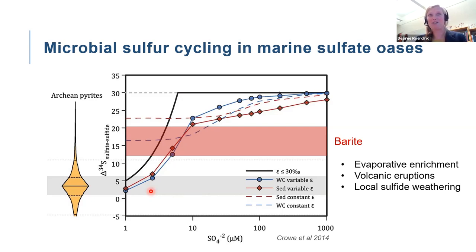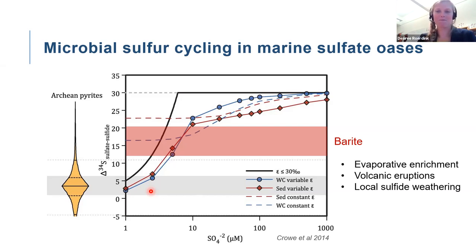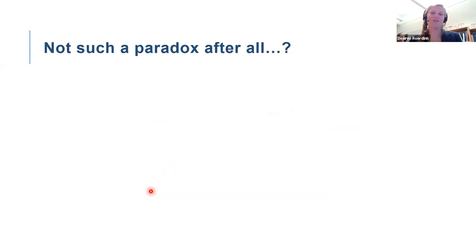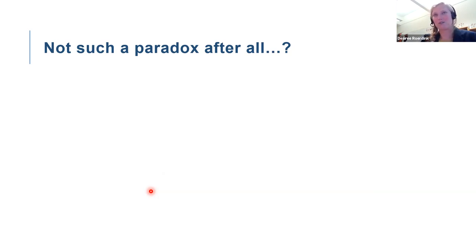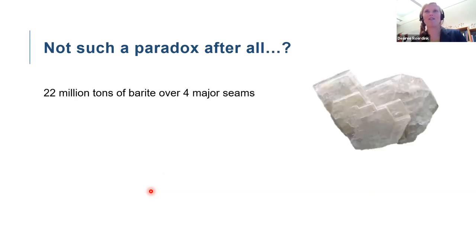Outside these sulfate oases, sulfate reducers may have been present but outcompeted by reduced sulfur metabolisms, or simply not producing a sizable shift in δ34S visible in the rock record. What produced these sulfate enrichments is still unknown — possibly evaporative enrichment, local volcanic input, or localized sulfide weathering. However, if we take the derived concentration from the biological isotope effect, maybe the barites are not such a paradox after all.